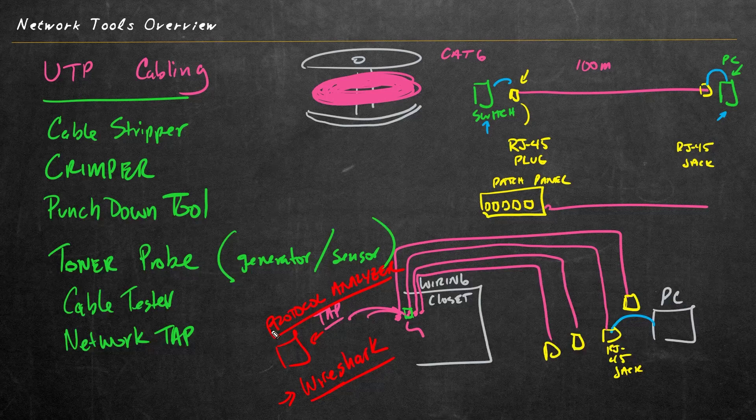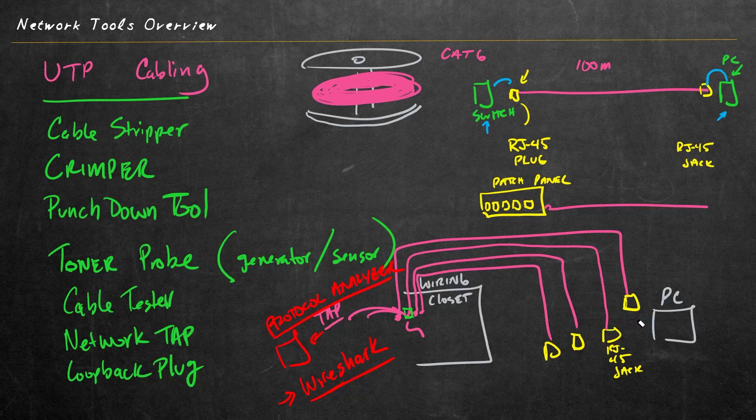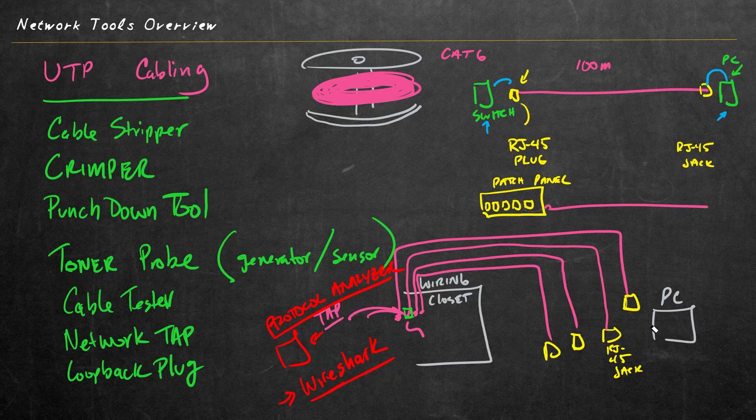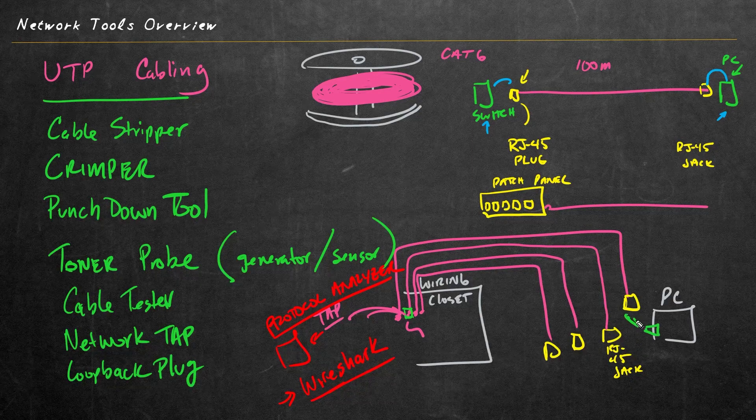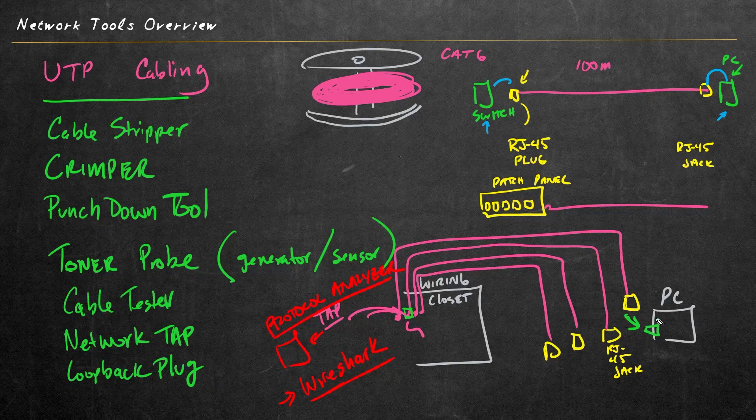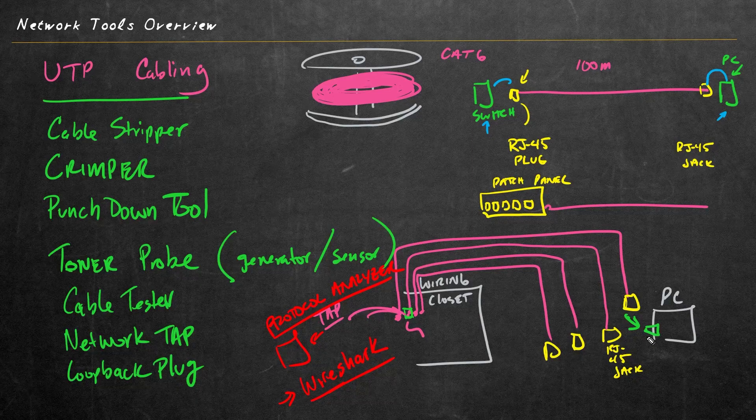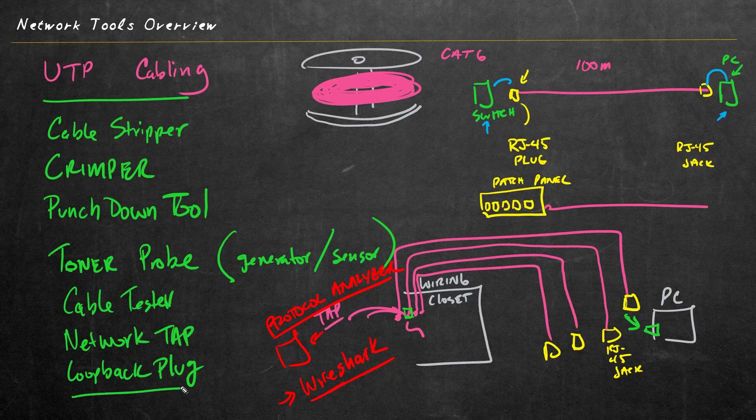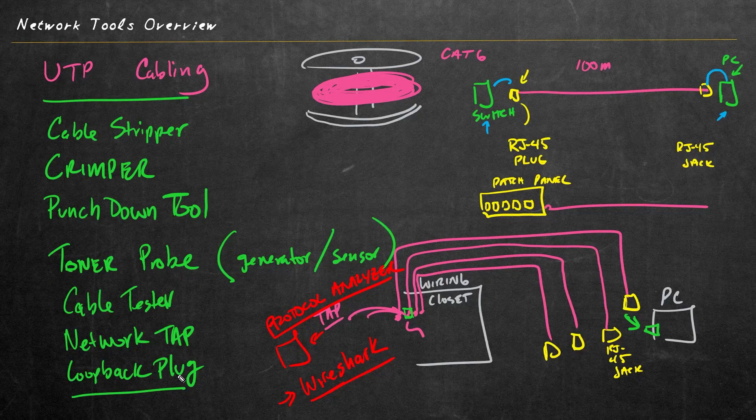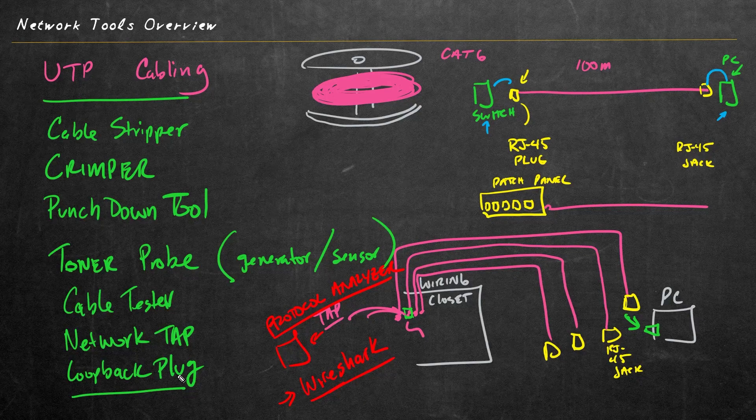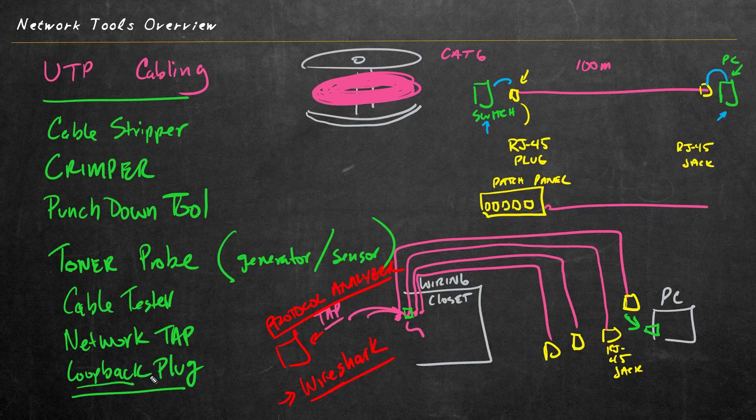Another tool that can come in handy when troubleshooting is a loopback plug. So if it's this PC that was having problems, we can remove the patch cable going to the Ethernet jack, and on the Ethernet port we can install a plug, a loopback plug. And then we can do some local diagnostics just to verify the network interface card is working correctly. Now, the concept of a loopback plug is applicable on lots of different types of networking devices.